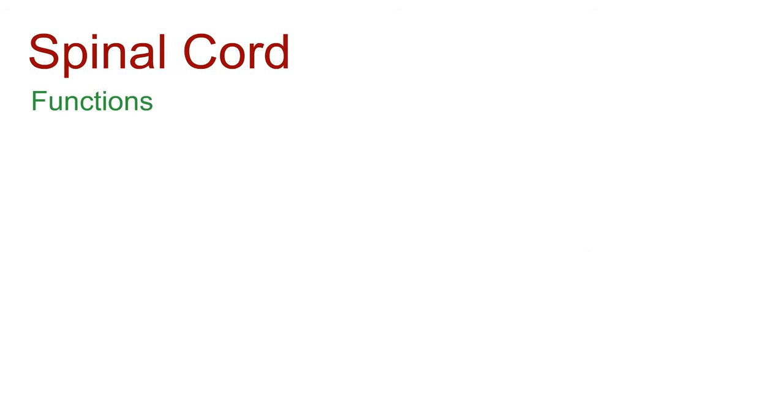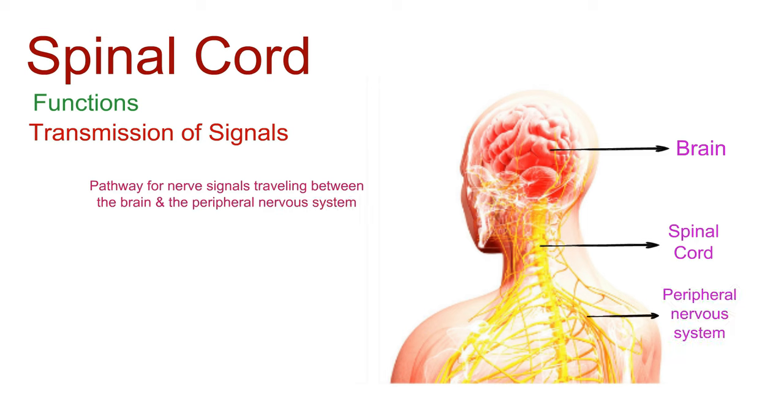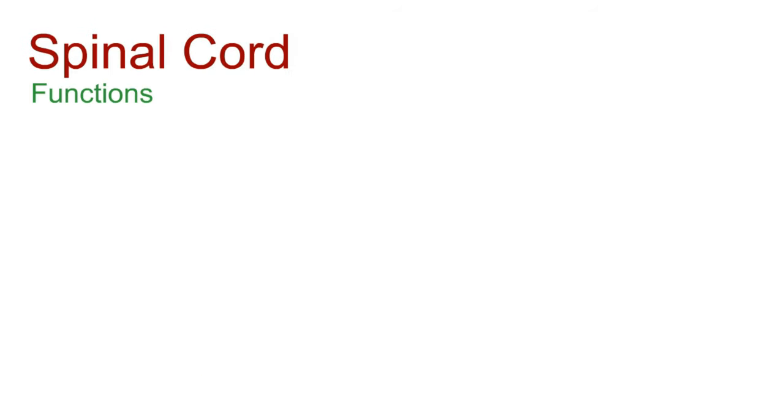The main functions of the spinal cord include: The spinal cord serves as a pathway for nerve signals traveling between the brain and the peripheral nervous system, which includes the nerves that control muscles and relay sensory information. Think of it as a high-speed information highway, transmitting signals that govern our movements and sensations.